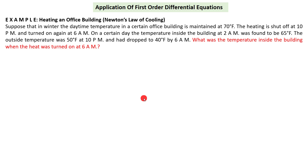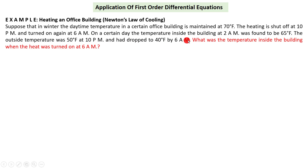Hello dears. In this tutorial we solve an application of first order differential equations: Newton's Law of Cooling. The example says: suppose that in winter, the daytime temperature in a certain office building is maintained at 70°F. The heating is shut off at 10 p.m. and turned on again at 6 a.m. On a certain day, the temperature inside the building at 2 a.m.